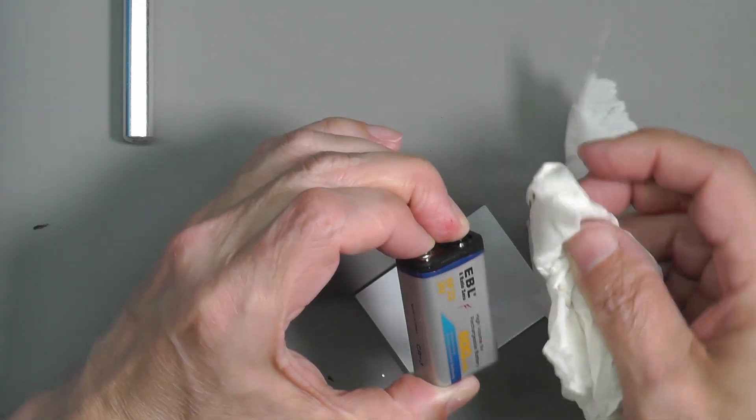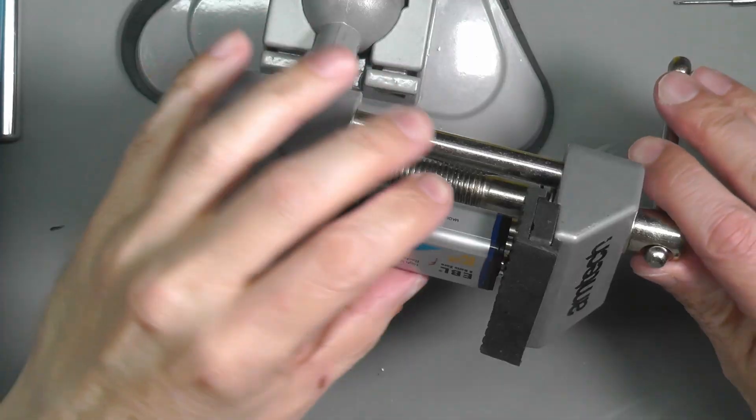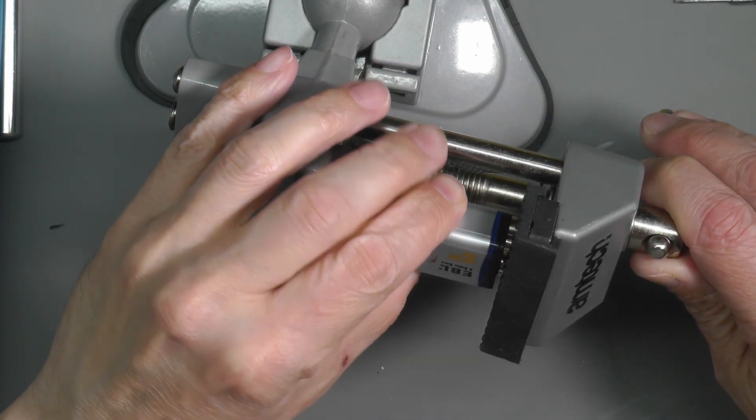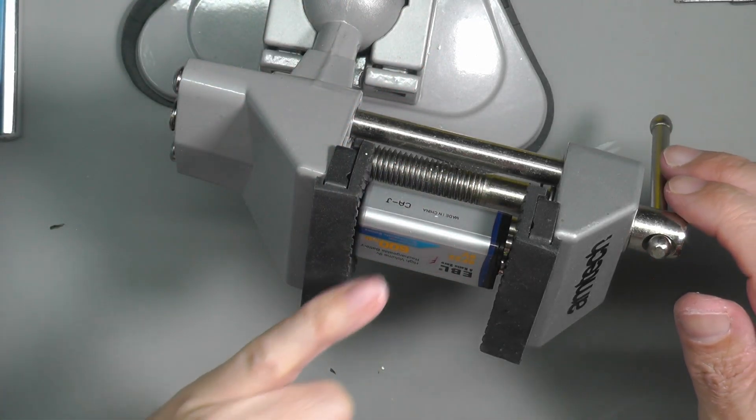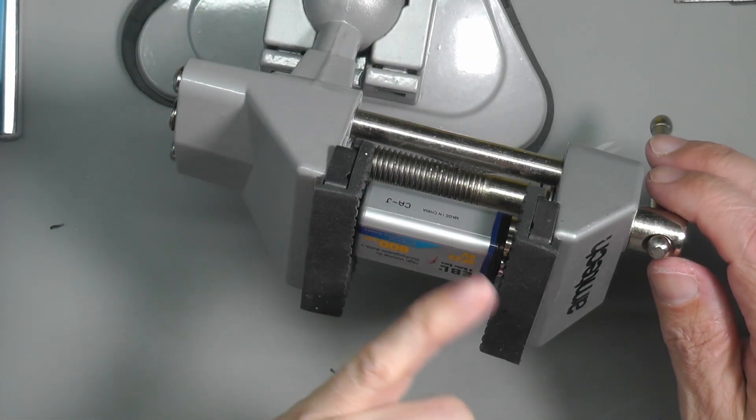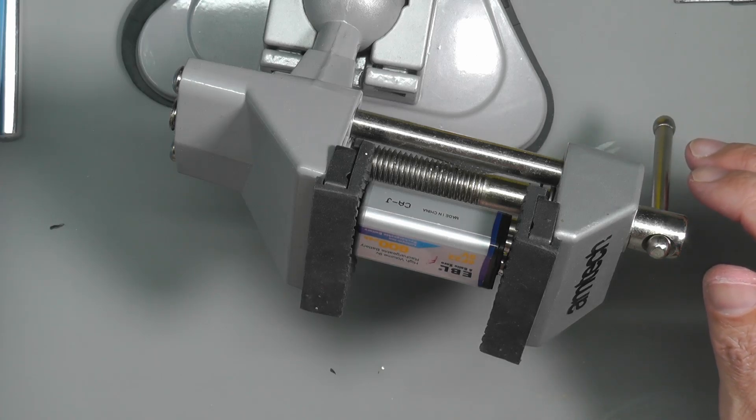There we go, just need to hold this for a little while and then let it dry properly inside and out. So there we go, clamped it into my table vice just to allow it to dry properly into place. We'll let that dry and hopefully we should have a serviceable battery after that.